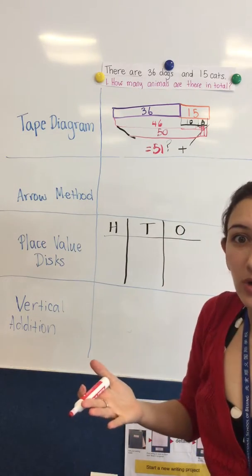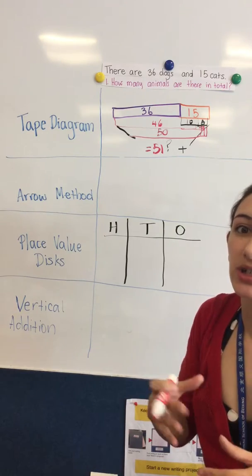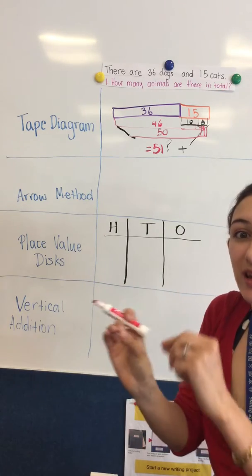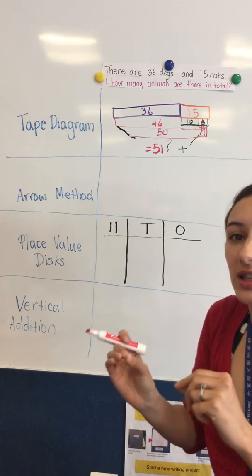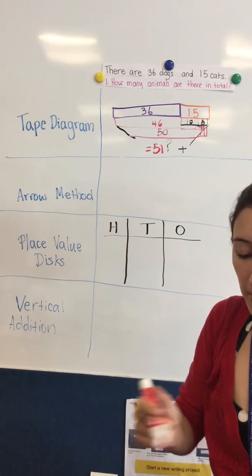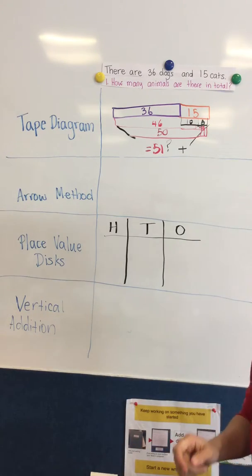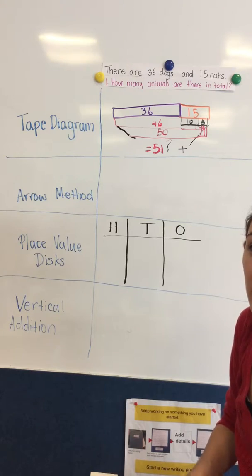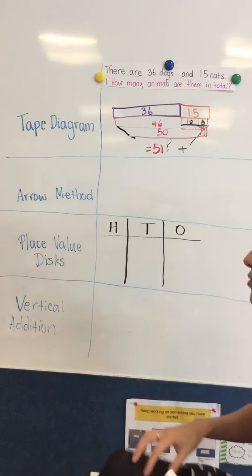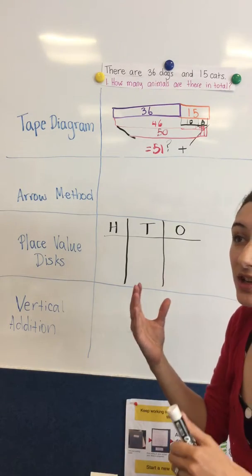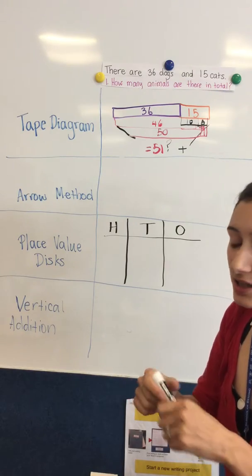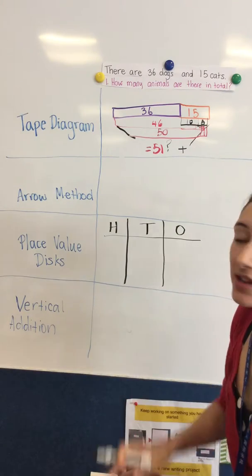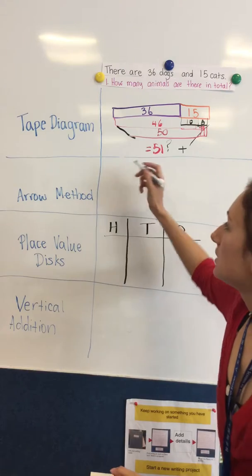So that's just one way that we could represent the problem and manipulate the numbers to solve it. The next way we're teaching children to solve problems is with the arrow method. This is a great method that eventually they'll be able to do in their heads. With the arrow method we would have our starting number which in this case is 36.